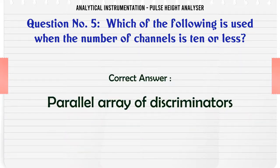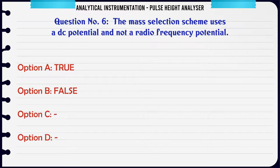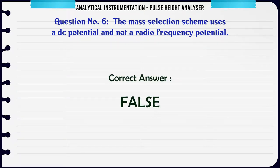Parallel array of discriminators. The mass selection scheme uses a DC potential and not a radio frequency potential. A. True. B. False. C. - D. - The correct answer is: False.